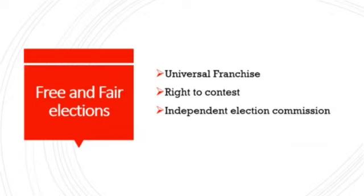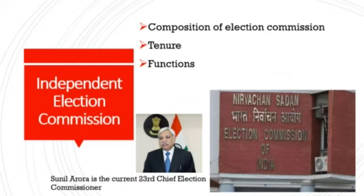Third provision for free and fair elections is an independent election commission. To ensure free and fair elections in the country, an independent election commission has been formed. The election commission holds elections in India and it is an independent body. Article 324 of the Indian Constitution provides for an independent election commission for the superintendence, direction and control of the electoral roll and the conduct of elections in India. The election commission's presiding officer is known as the Chief Election Commissioner.